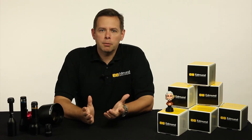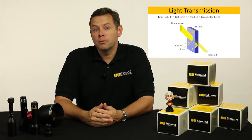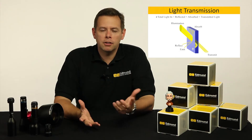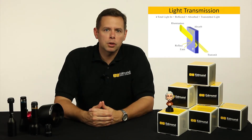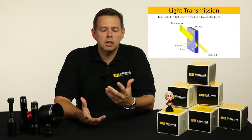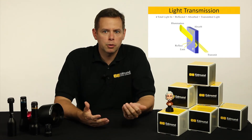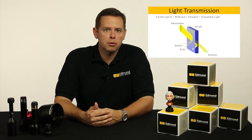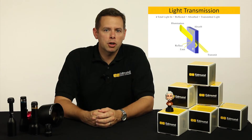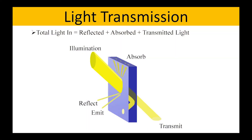The next thing that can happen with light as it goes into an object is it can actually be transmitted through. We see this every day as we look at things like window panes or through the lens of a camera system. If we were to look through it, we'd see light transmitted through to our eyes, and you may see some subtle reflections, but depending on the material, you can actually see light passing through the object itself.